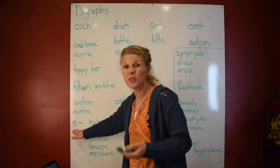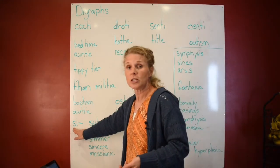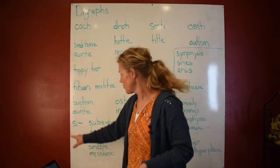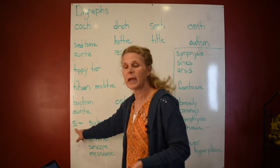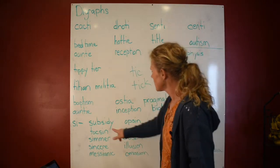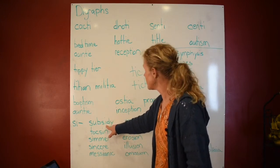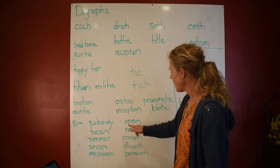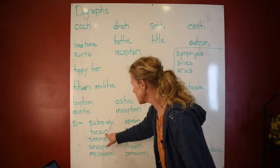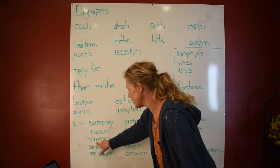Now we're going to move into the SI digraphs — they follow the same rules pretty much, but are a little bit different. SI says 'sh' or 'zh' depending on if a vowel is in front of it — a vowel will force SI to say 'zh.' Now look: SI followed by a consonant — this will not be a digraph. So 'subsidy' — and 'opsin' with a consonant. 'Toxin' — consonant — not a digraph. At the beginning of a word, we know it's not a digraph. 'Simmer' — not a digraph.